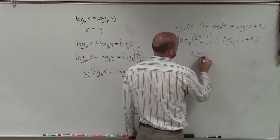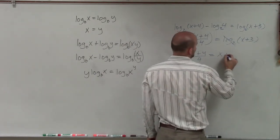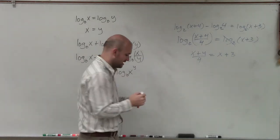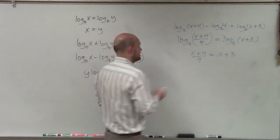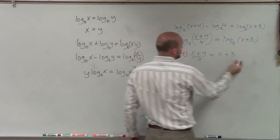So it's x plus 4 divided by 4 equals x plus 3. Now, to get rid of the fraction, I need to make sure I multiply by 4 to get the 4 off the denominator.